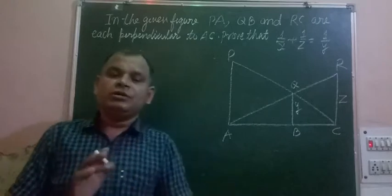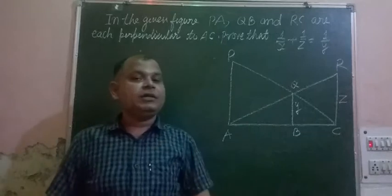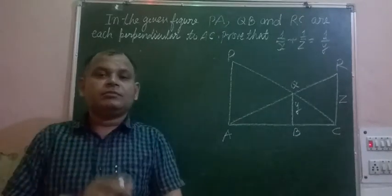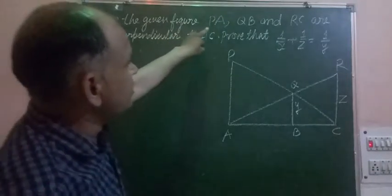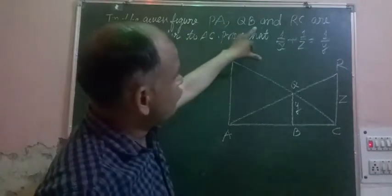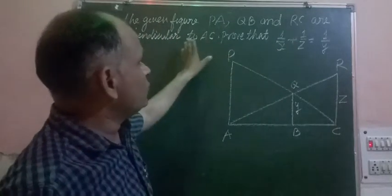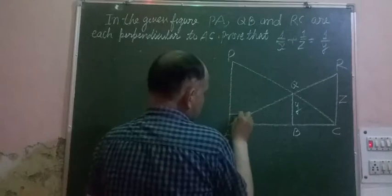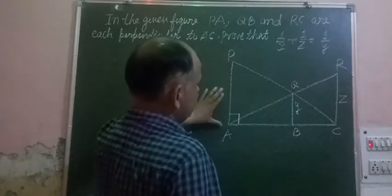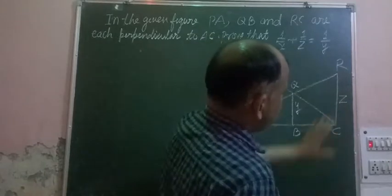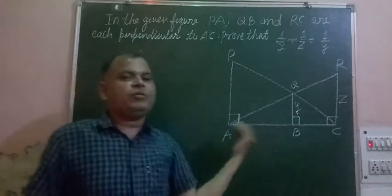You should learn this fact that 1/x plus 1/z is equal to 1/y for other problem solving. The question says that in the given figure, PA, QB, and RC are perpendicular to AC. These are three sides PA, QB, and RC perpendicular to AC. So we make the sign of perpendicular.